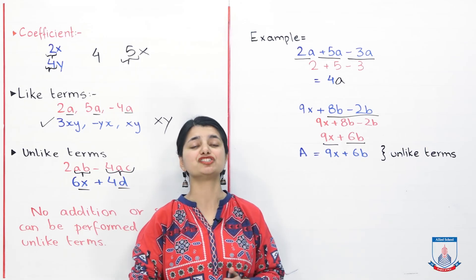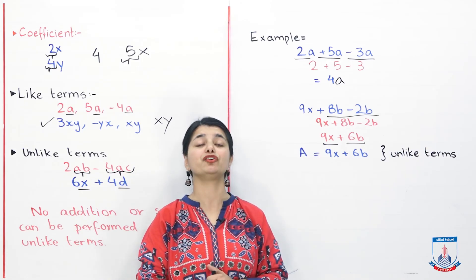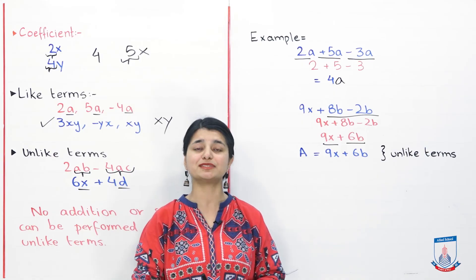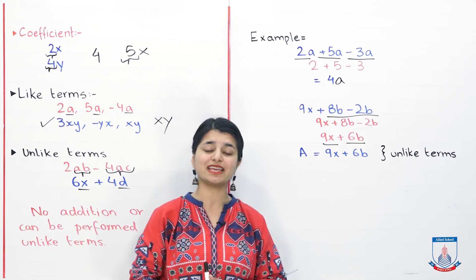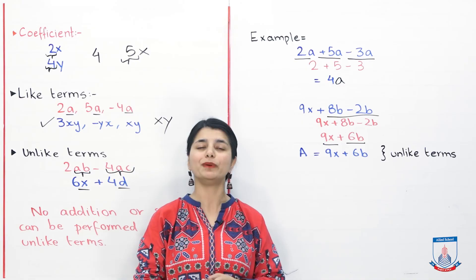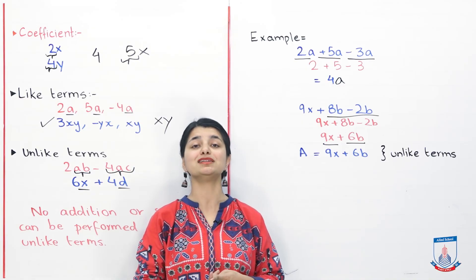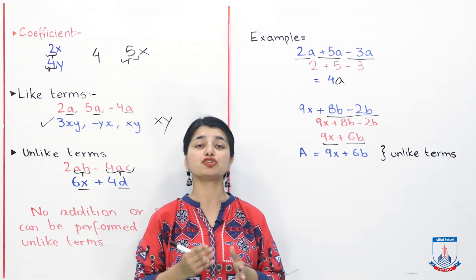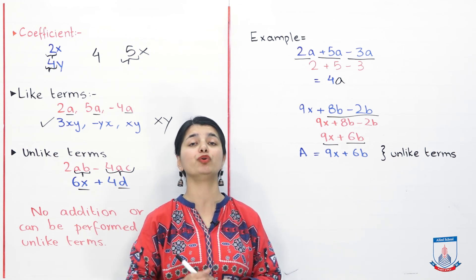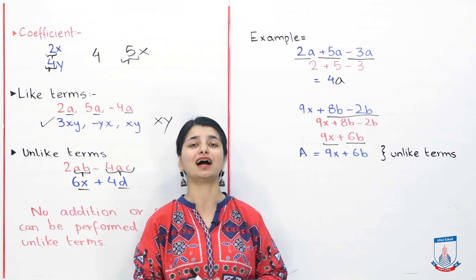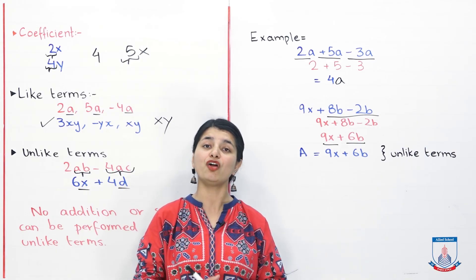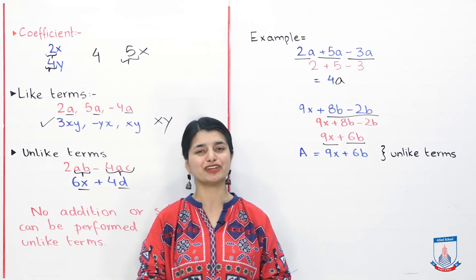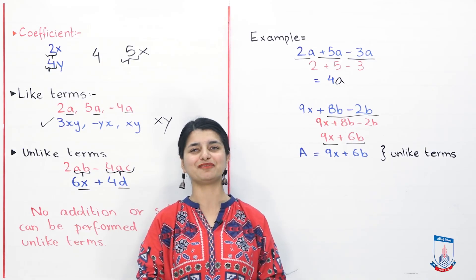With that, our lecture ends. Today we only had to do an introduction to Algebra so that you become acquainted with all the terms. Now we know what a sentence is, what a statement is, what an open statement is, what variable, constant, and coefficient are, and what the difference is between like and unlike terms. All of these are things you should know now, because in the next lecture we will start Exercise 8a. I will see you in the next lecture, inshallah. Until then, take care, Allah Hafiz.